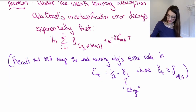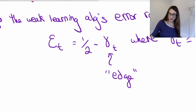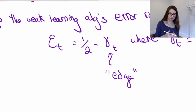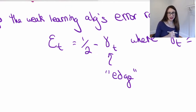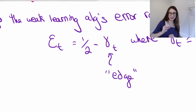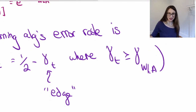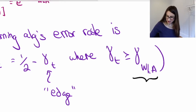The amount that it's less than a half is called the edge. So ε_t is the error rate of AdaBoost. It has to be less than a half for the weak learning algorithm, no matter what distribution of data you put into it — it has to give you a little bonus over one-half. The amount that it's better than a half is called the edge — the edge over random guessing. And the weak learning assumption is that that edge is always bigger than γ_WLA, which is strictly bigger than zero.